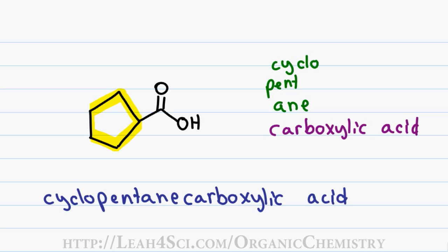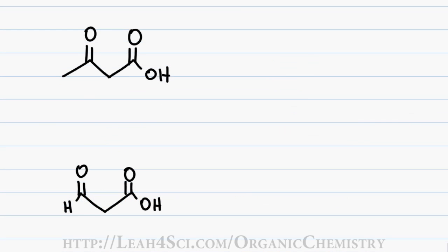When you have another carbonyl in your molecule with your carboxylic acid, it automatically gets the lower priority, and regardless of having a ketone or an aldehyde, they both get the prefix oxo. Let's take a look at these two examples. For the first one, we have four carbons where I have a carboxyl on number 1 and a ketone on number 3. For the second example, I have only three carbons with the carboxyl getting the number 1 and the aldehyde getting the number 3.